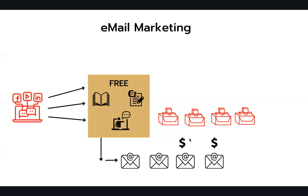Once you have that list, you can sell them not just one product but multiple products. That is where email marketing is so powerful. For example, recently there was a Facebook and Instagram blackout. If you have these emails in your hand, you have full control — you can send them an email and offer them what you want, and people will buy.